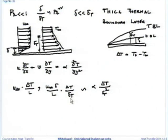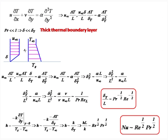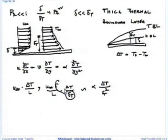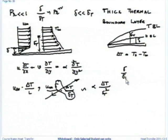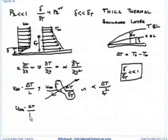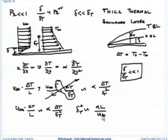Which terms are important? The second term v del T by del y: v is u-infinity delta by L, and del T by del y involves delta_T in y. Delta by delta_T is a small number because Prandtl number is less than 1, so I can neglect this term compared to u-infinity delta_T by L. So the left-hand side gives: u-infinity delta_T by L is of the order of alpha delta_T by delta_T squared, giving delta_T squared is of the order of alpha L by u-infinity.